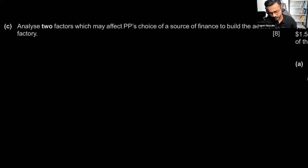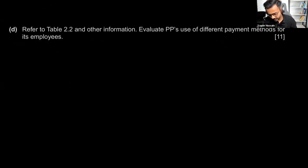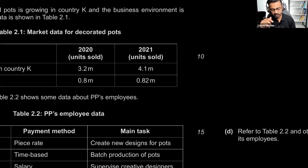Part C is a question about sources of finance — not asking about different sources, but two factors you might consider when choosing between sources. Part D is a question on HR where we'll have to evaluate different payment methods. Payment methods are found within the chapter on motivation — one side is understanding through theories, the other is implementing through monetary and non-monetary rewards. So three units are clearly dominant here: units one, three, and five.